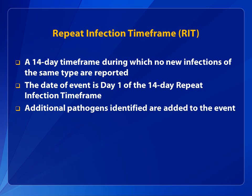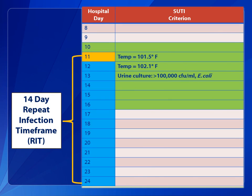A new definition, repeat infection timeframe, or RIT, is introduced. RIT is a 14-day timeframe during which no new infections of the same type are reported. The date of event is day one of the 14-day RIT. If additional pathogens are identified within the RIT and found to be associated with the event, those pathogens are added to the event. A new infection of the same type is not reported until the 14-day RIT has elapsed. Returning to the example of the SUTI event, the RIT is hospital day 11 through and including hospital day 24.